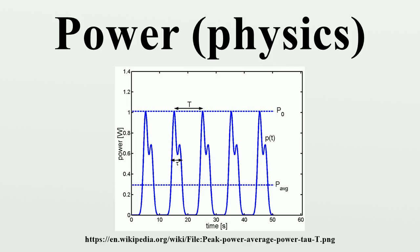If ΔW is the amount of work performed during a period of time of duration ΔT, the average power P over that period is given by the formula. It is the average amount of work done or energy converted per unit of time. The average power is often simply called power.